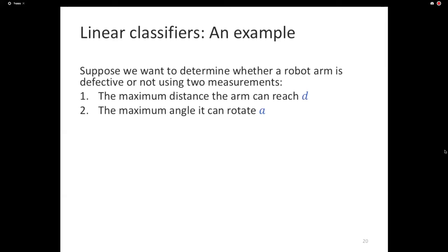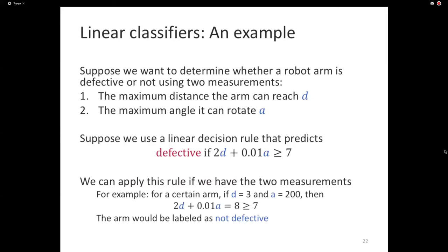Sometimes people get confused between regression and classification if you've not seen it before. Remember that regression is about predicting real-valued numbers. Real-valued outputs. Classification is about predicting discrete outputs. The prototypical example is binary classification with two outputs, spam and not spam. And in regression, you're predicting real numbers. Let me give you an example of a linear classifier. Imagine that you're trying to decide whether a certain robot arm is defective or not. And to do that, you're taking two measurements. One of them is the maximum distance that the arm can reach. And the second one is the maximum angle it can rotate.